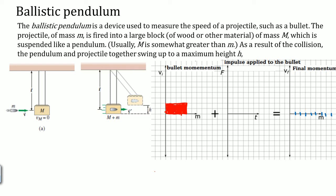When the bullet gets stuck together with the block, the mass is more, but the momentum is the same — still 8 units. So the momentum is conserved: the impulse that actually occurred from this collision is zero in terms of external forces.